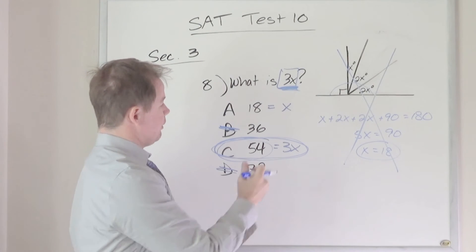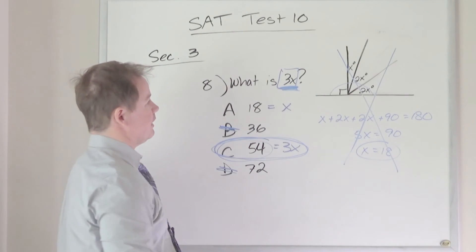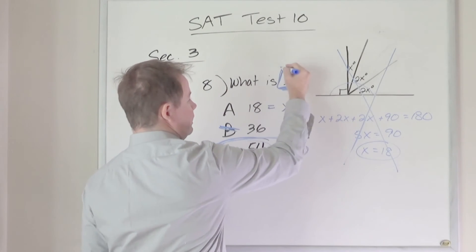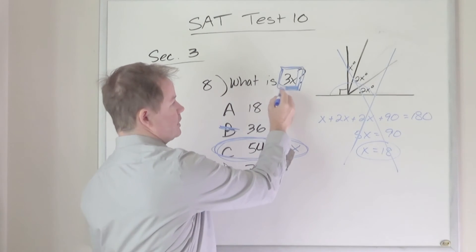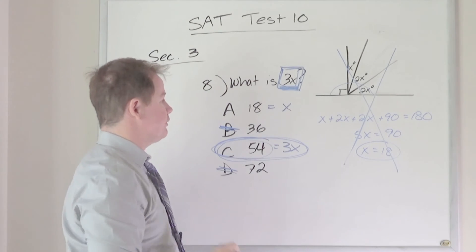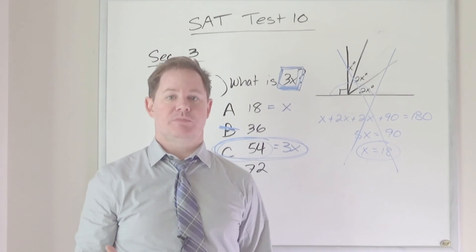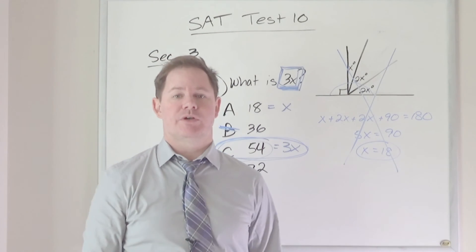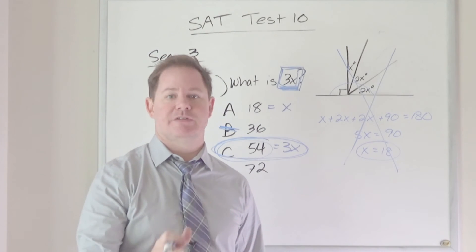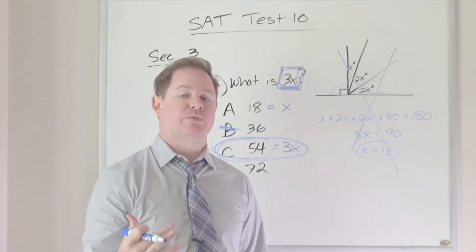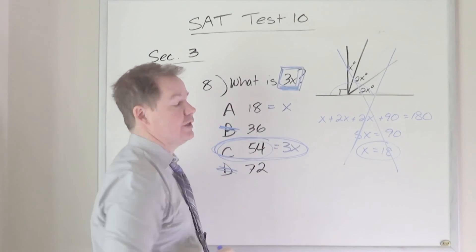So if you can hone in on that relationship of your answer choices, and understand that whenever you're asked about an x value that has a coefficient, whatever that coefficient is, you want to look for that relationship between two of your answer choices. For one answer choice to be 3 times the value of another in this case, and if the coefficient had been 5, you're looking for an answer choice that's 5 times the value of another, and so forth. You want to look at that coefficient because that's going to tell you the relationship to look for in your answer choices.